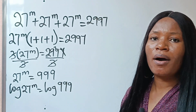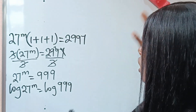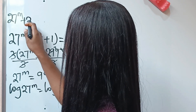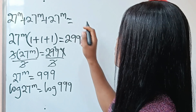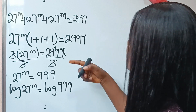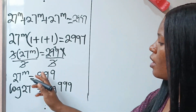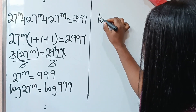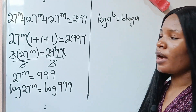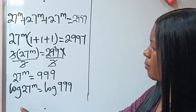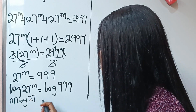At this point we are going to apply the power rule. The power rule states that log of a to the power of b is equal to b times log a — so the exponent comes down to multiply. Applying that, we have m times log 27 is equal to log 999.